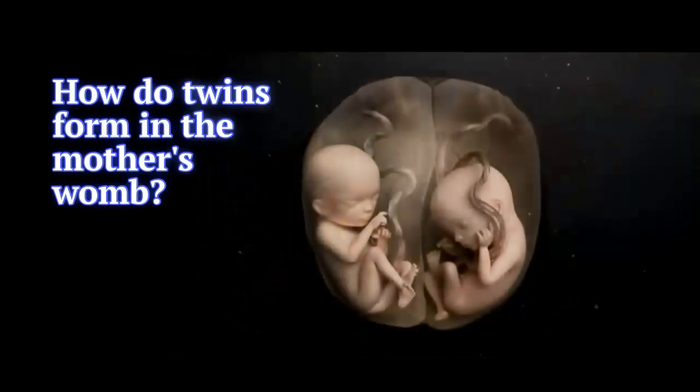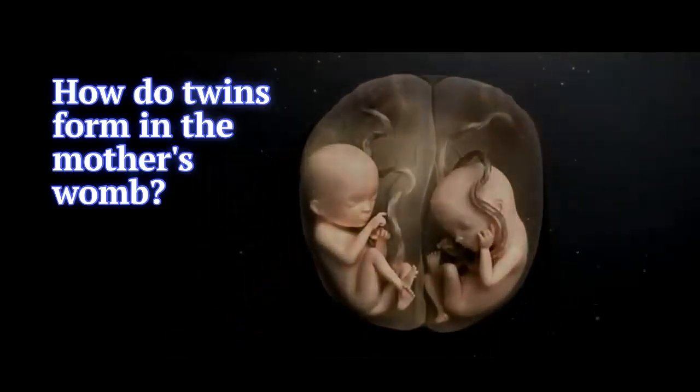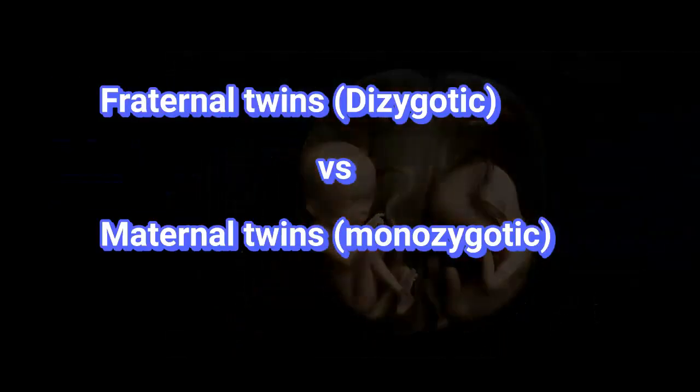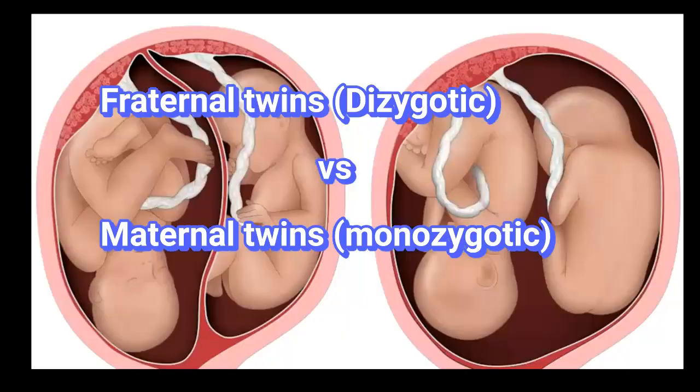How do twins form in the mother's womb? In the fascinating world of twins, there are several types of different twins. Today, we will explore how fraternal and identical twins are formed in the mother's womb.